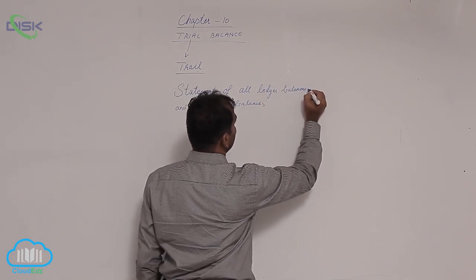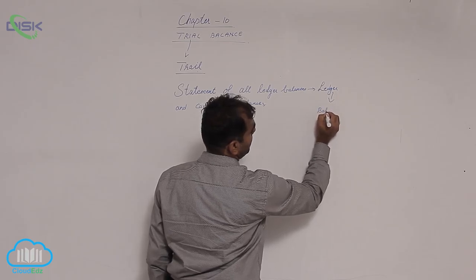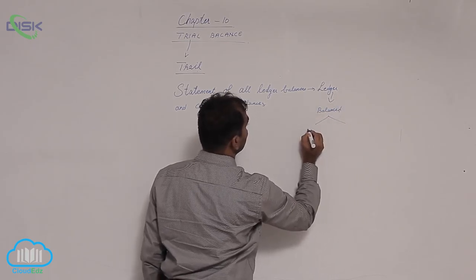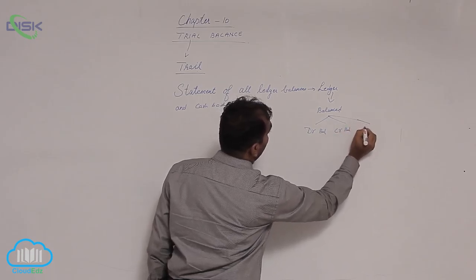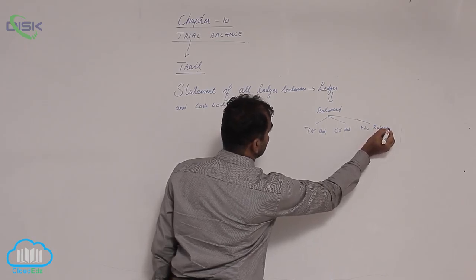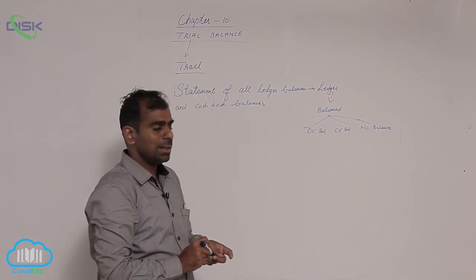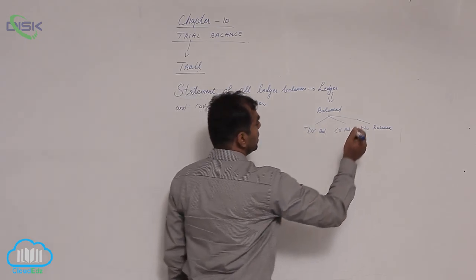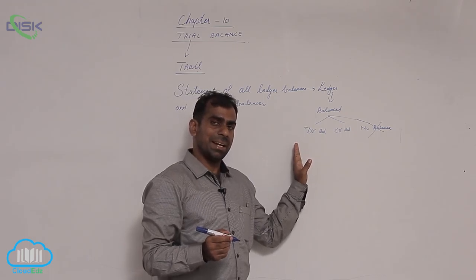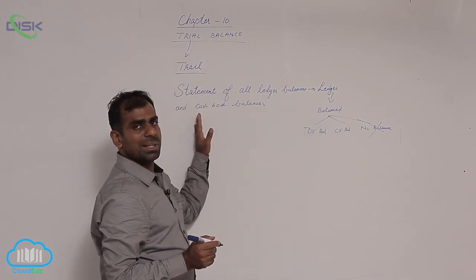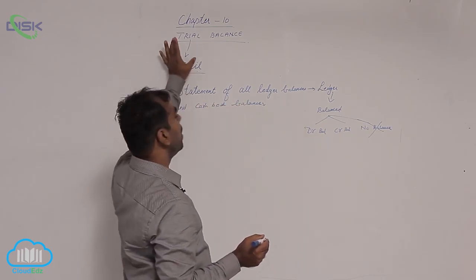These ledger balances you have learnt in the chapter called Ledger. When a ledger is balanced, you either end up with a debit balance, a credit balance, or no balance. When a ledger shows no balance, both the debit side total and credit side total of that ledger are equal. We are only concerned about ledgers which show either a debit balance or a credit balance, and also cash book balances. Once you have these balances, you prepare a statement called trial balance.